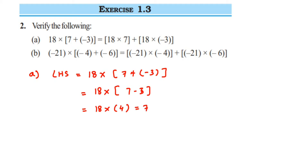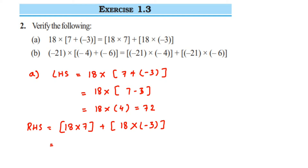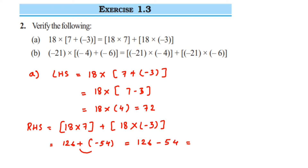7 minus 3 is 4, so this is 18 multiplied by 4, which gives us 72. Now for the RHS: 18 multiplied by 7, plus 18 multiplied by minus 3. 18 sevens are 126, plus 18 threes are 54, and since there is a minus sign, we get minus 54. So 126 plus minus 54 equals 126 minus 54, which equals 72. LHS equals RHS, so this is verified.